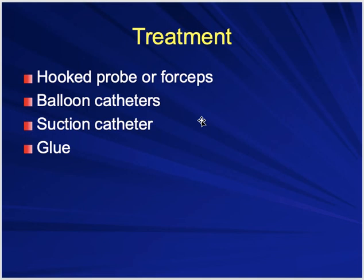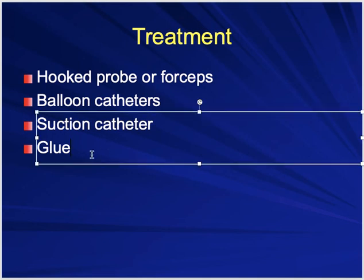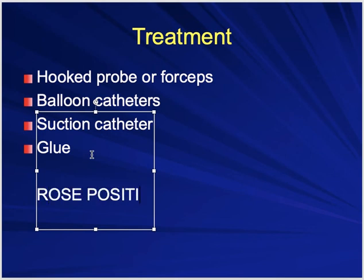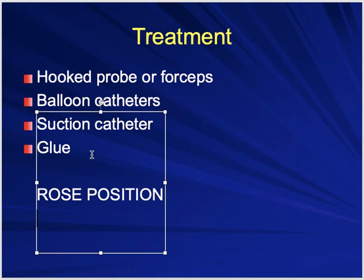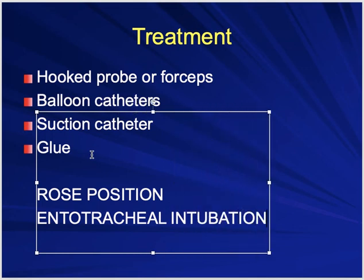Other removal techniques include balloon catheters — a catheter is placed behind the object, the balloon is inflated, and the object is dragged out. Suction catheters and glue can also be used if the object is directly visible. Nasal endoscopes help locate and carefully remove foreign bodies. Most removals are done in the rose position. For uncooperative children, endotracheal intubation may be done if there is a high risk of the object entering the airway during surgery.